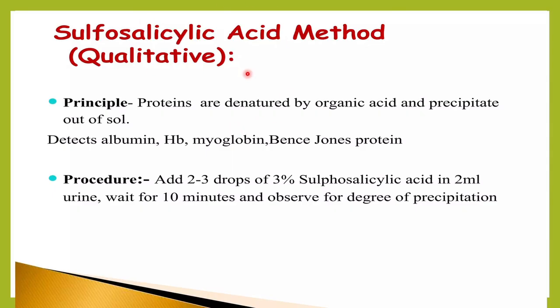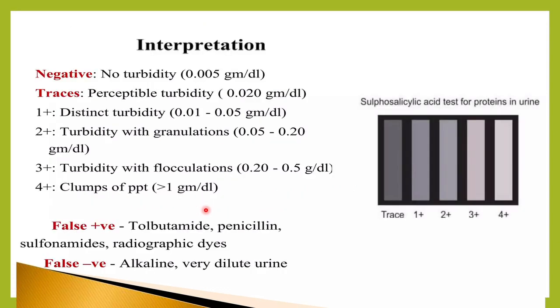Next is the sulfosalicylic acid method. Proteins are denatured using the organic acid sulfosalicylic acid, causing them to precipitate, which is then measured. This method detects not only albumin but also hemoglobin, myoglobin, and Bence Jones protein. The procedure involves adding 2–3 drops of 3% sulfosalicylic acid to 2 mL of urine, waiting 10 minutes, and grading the degree of precipitation as 1+, 2+, 3+, or 4+ (4+ being more than 1 g/dL). This test can also give false positive and false negative results.